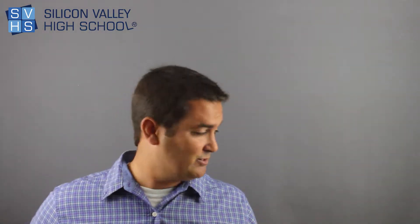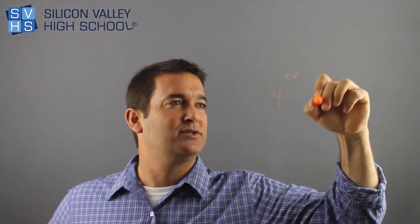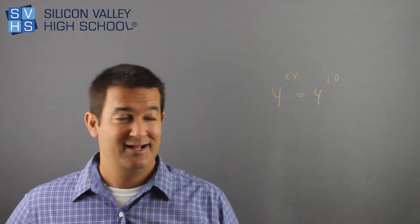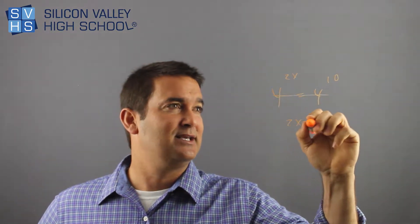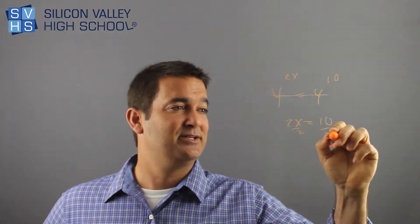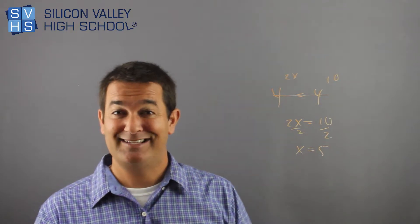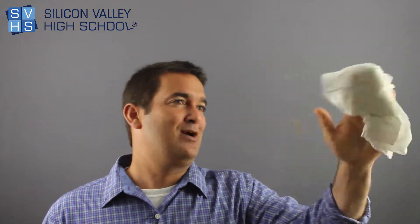Obviously math teachers enjoy making things more complicated, but again, if the bases match, the exponents equal each other. So here's a couple examples. Let's say you had 4^(2x) = 4^10. Do the bases match? Yes. So 2x = 10, divide by 2, x = 5. You see why this is actually fun?